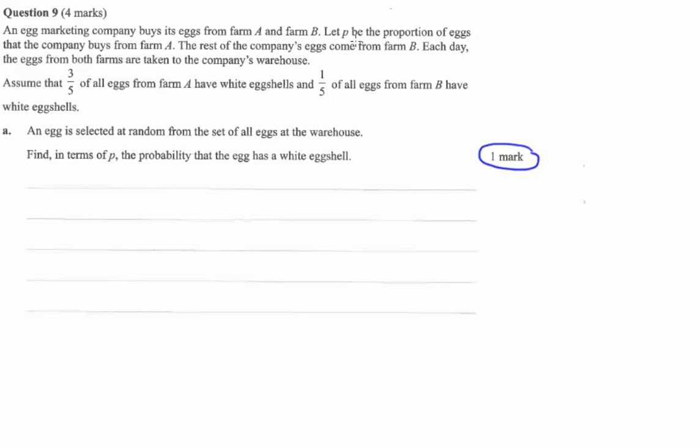So you're buying some eggs and you've got two farms, you've got Farm A and Farm B. And for some reason we care about the eggs having white eggshells. And depending on which farm we go to, we're more or less likely to get white eggshells.